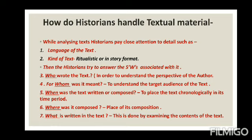Next, historians move to understand the five W's associated with their task. The first W is: who wrote the text? By answering this, historians are able to get familiar with the perspective of the person who wrote it. So the first W is 'who.'